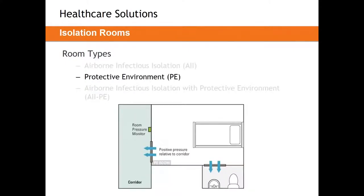The protective environment, or PE room, is essentially the opposite of the AII room. The patient has a compromised immune system and their body can't fight infections as well. We protect this person by positively pressurizing the space — we constantly blast air out of the room to ensure no air infiltrates in. You'll see a large proportion of that offset air flowing out around and underneath the doorway.